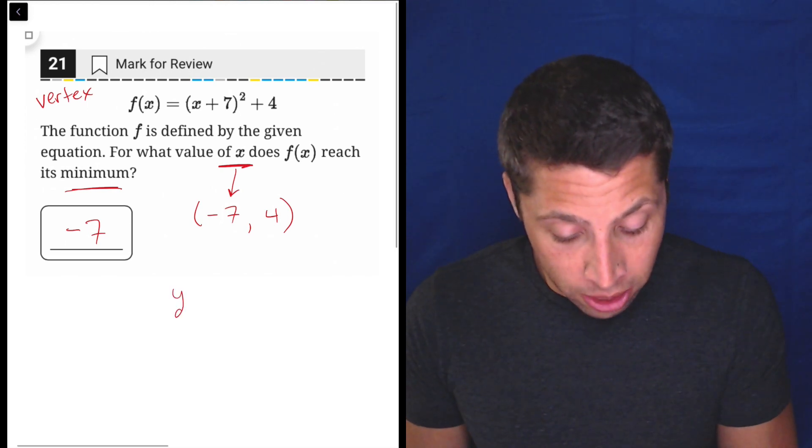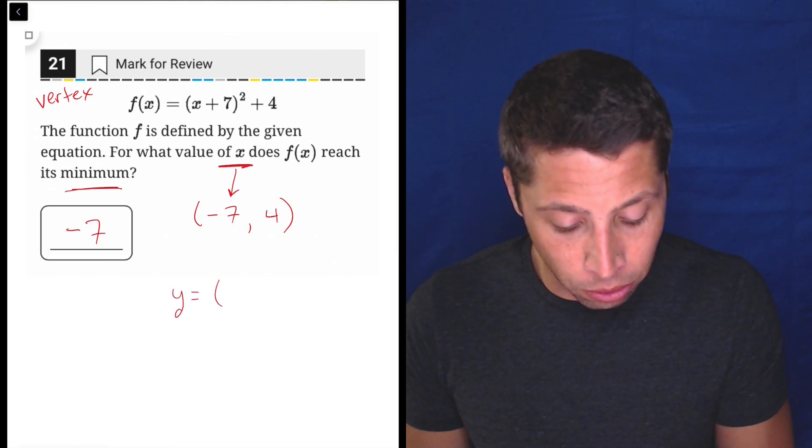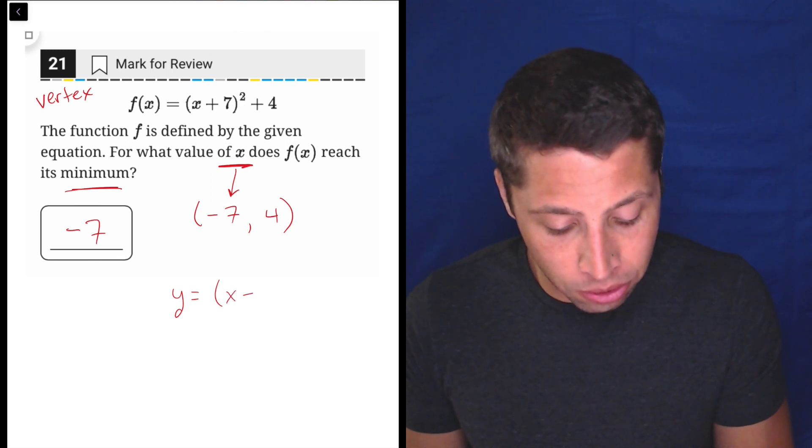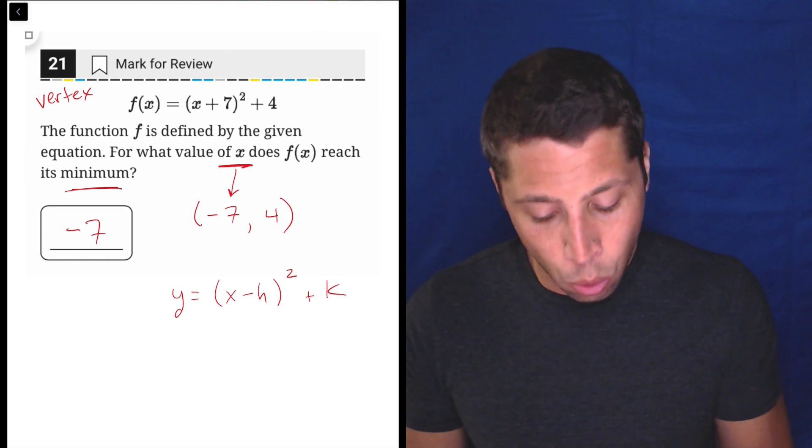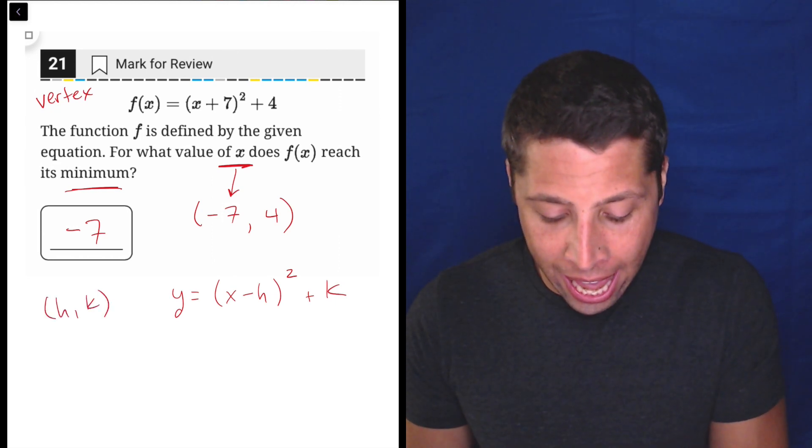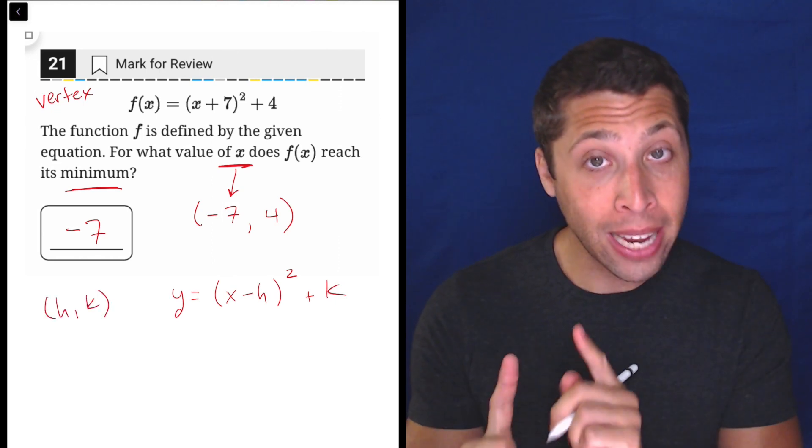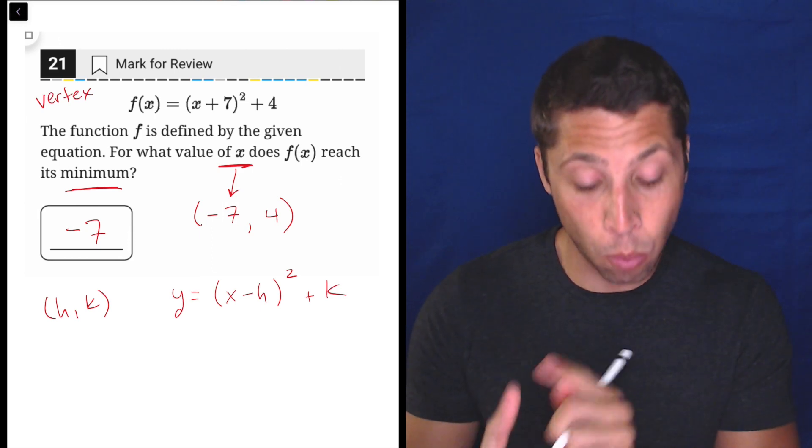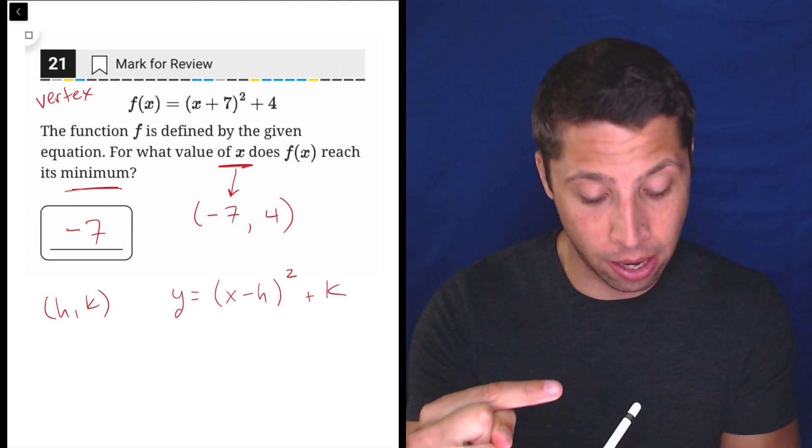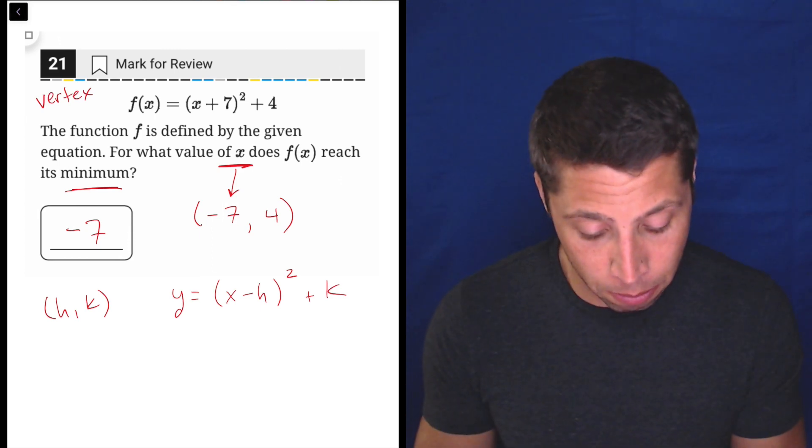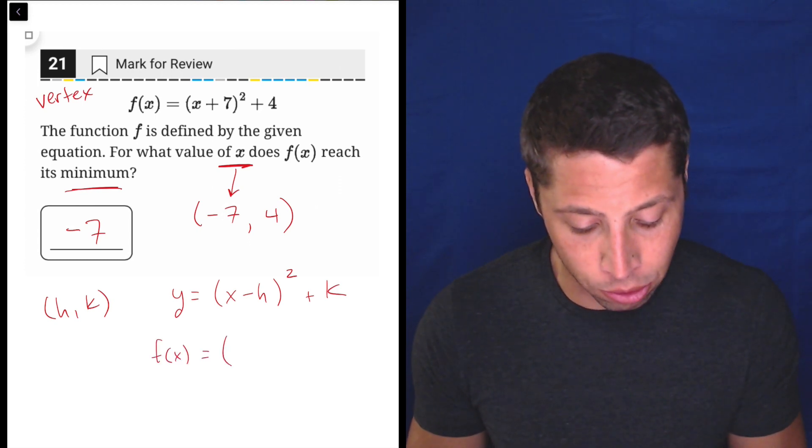Just to be clear, the vertex form is y equals, in general, it's y equals (x - h)² plus k, where (h,k) is the vertex. So notice there's a minus built into this equation. That's why I reversed the sign for the seven. It was a positive seven before. Now it's going to be a negative seven as our actual value.